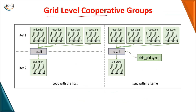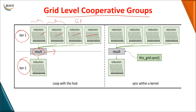The basic need for grid level cooperative groups arises with traditional CUDA programming. As you can see, this is a problem where we were doing two iterations. The original problem involved dividing work into blocks containing individual threads. Once you perform operations on individual blocks, you get intermediate results, which are computed by the GPU. These intermediate results then have to be sent to the CPU, which cross-checks them and forwards them to the second iteration. This was the normal procedure in traditional programming, where multiple kernel launches are required.